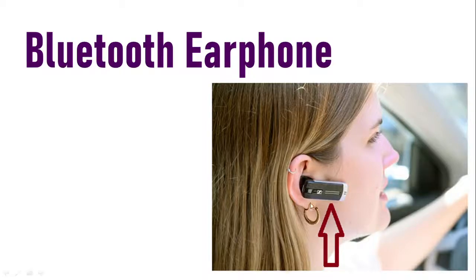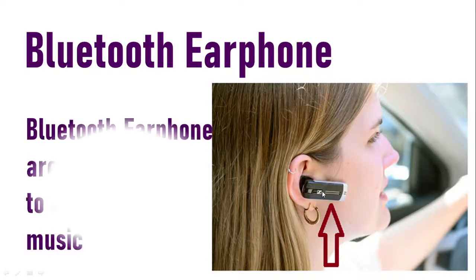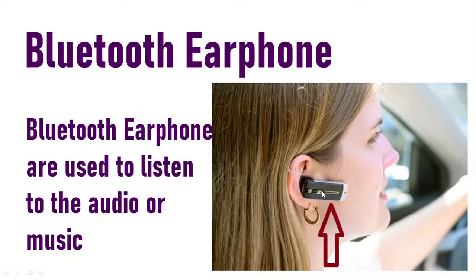Bluetooth Earphone. An earphone functions in both directions because it has a mic also — you can both send and receive audio. Bluetooth earphone is used to listen to audio or music, and if it has a built-in mic, we can also send audio back to the system.